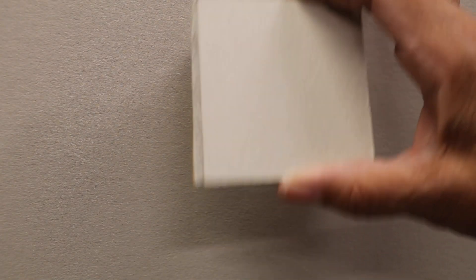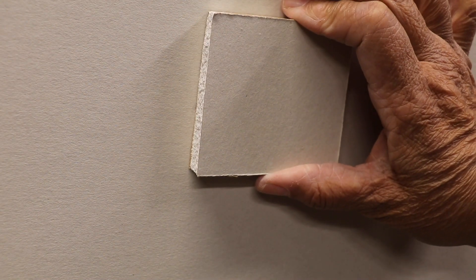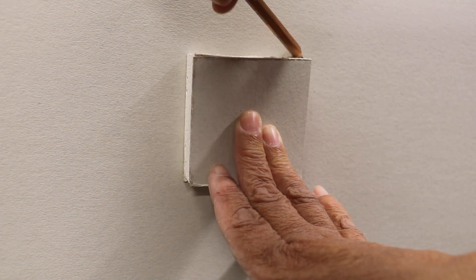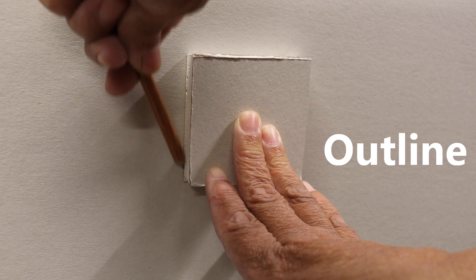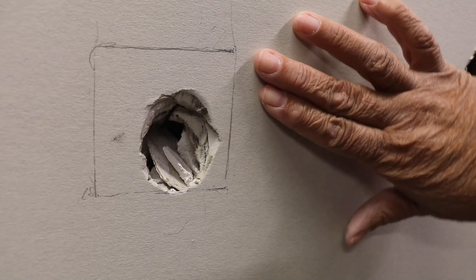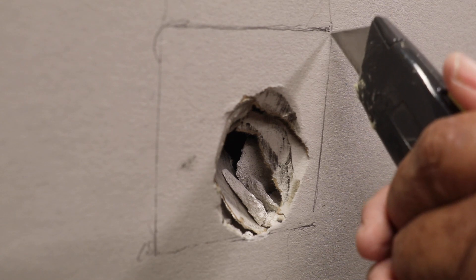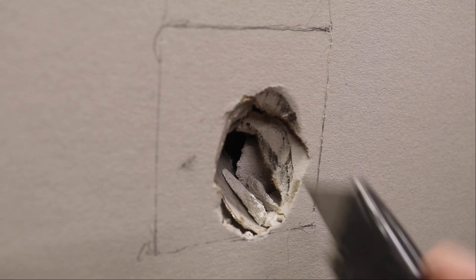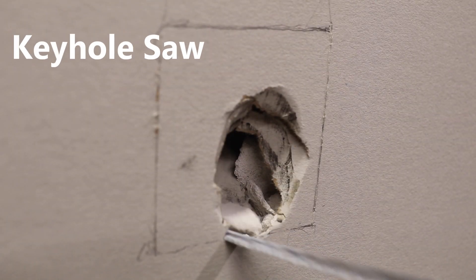All right, you want to take a piece of scrap drywall large enough to cover the damaged area. Next, you want to take a pencil and outline around your drywall patch. Now once you have the area outlined, you'll want to cut it out with a utility knife or a keyhole saw if you have one.